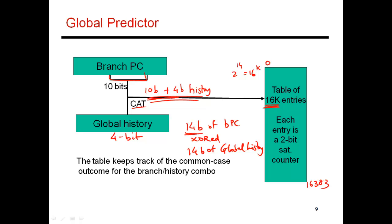If I take 14 bits of PC, I have more information. Likewise, if I have 14 bits of global history, I again have more information. And XORing it somehow increases my information content, because each of these bits does play a role in influencing that final 14-bit number.